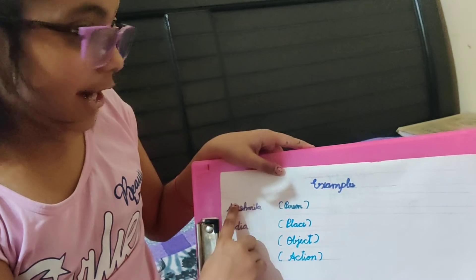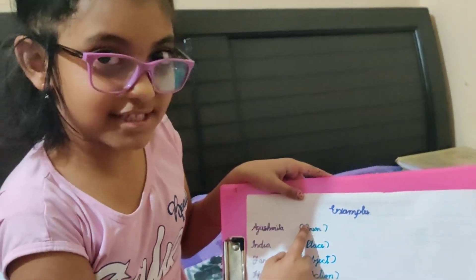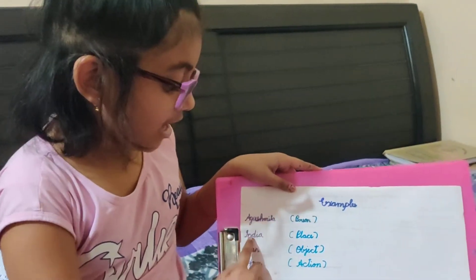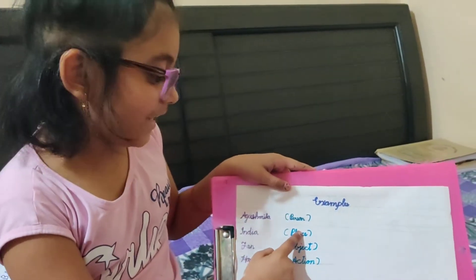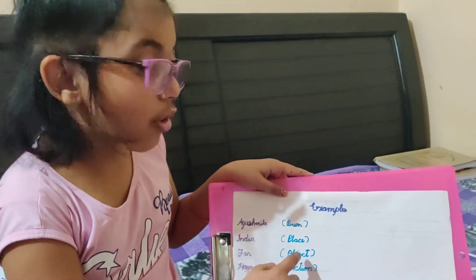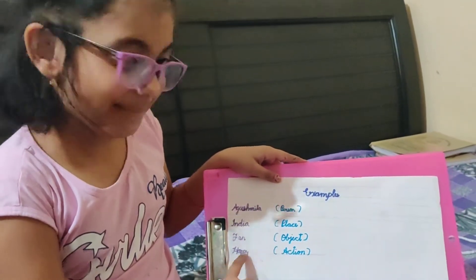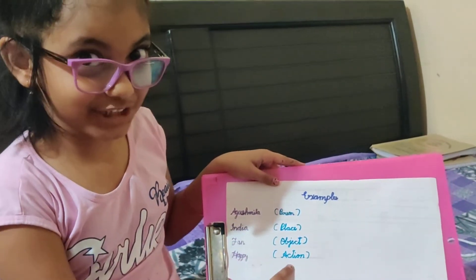Example: Aishmita — person. India — place. Fan — object. Happy — action.